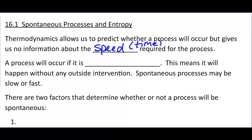A process will occur if it's spontaneous. If I take an ice cube and put it on the table, it will melt. I don't have to do anything, it'll just melt. If I put an iron nail outside, it will rust. I don't have to do anything, it'll just rust. You don't see rust turning back into oxygen and iron — that doesn't occur spontaneously. So, some things occur spontaneously without any outside intervention. And again, they could be slow or fast.